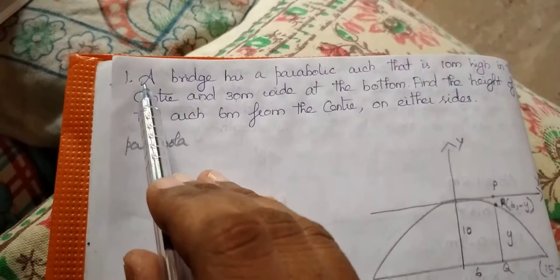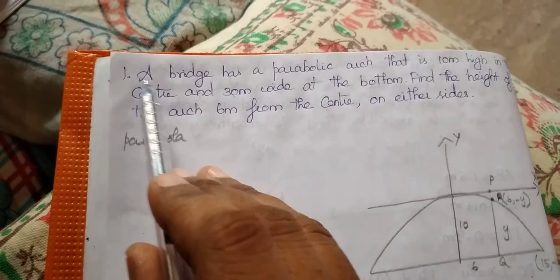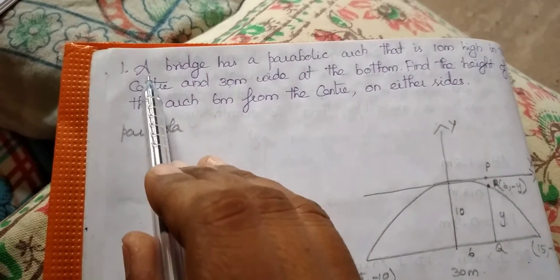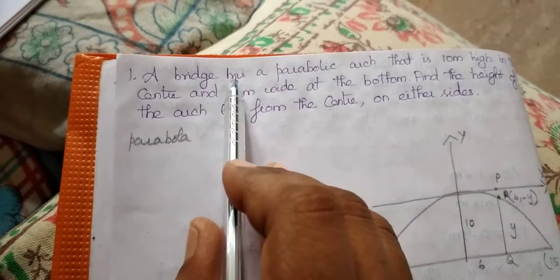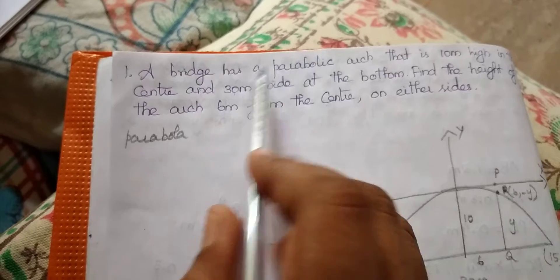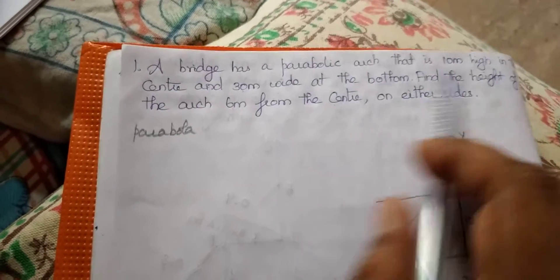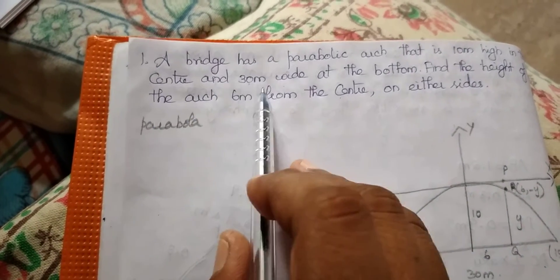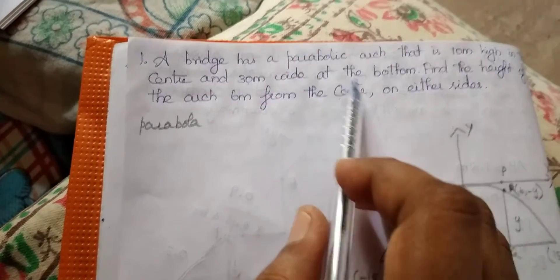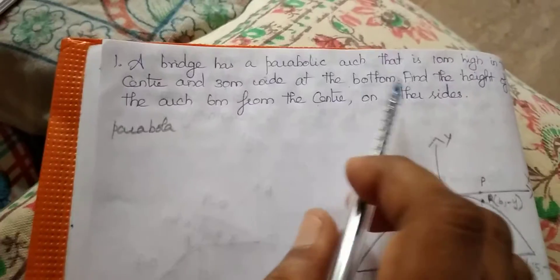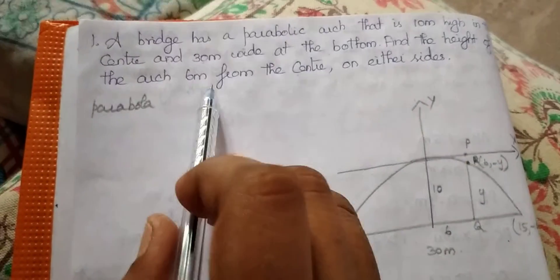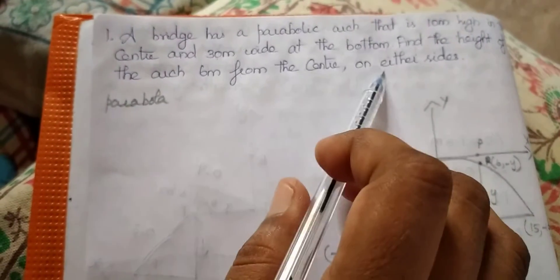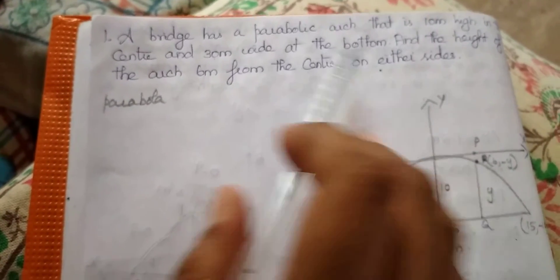Good morning to all. This is from exercise 5.5. A bridge has a parabolic arch that is 10 meters high in the center and 30 meters wide at the bottom. Find the height of the arch 6 meters from the center on either side.